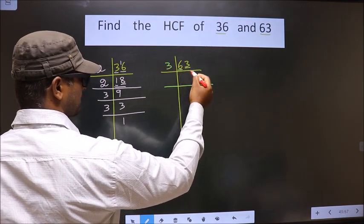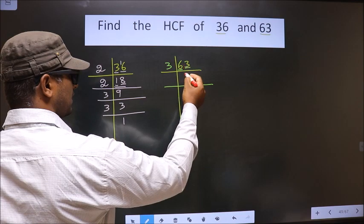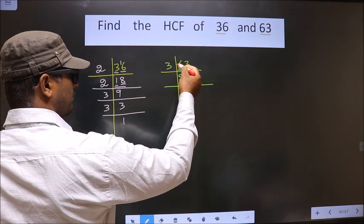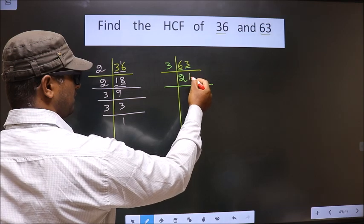Now the first number is 6. When do we get 6 in the 3 table? 3 times 2 is 6. Next number is 3. When do we get 3 in the 3 table? 3 times 1 is 3.